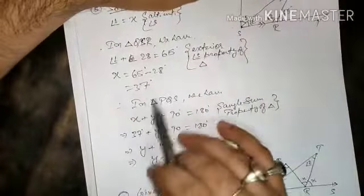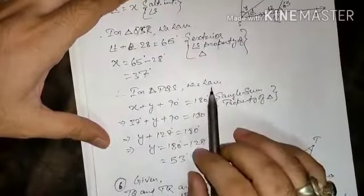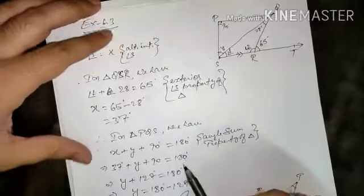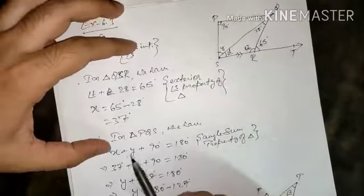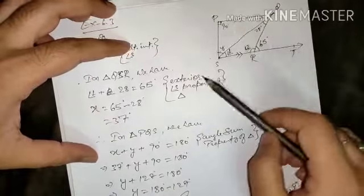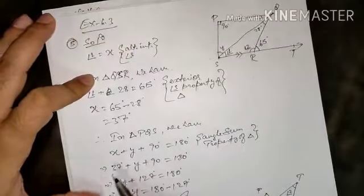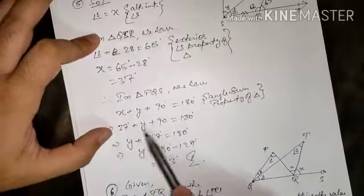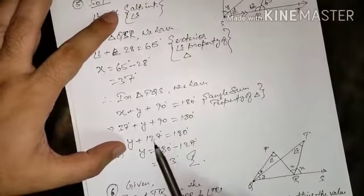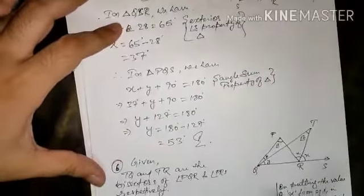Now in triangle PQS, we have X plus Y plus 90 equals 180 degrees. Here we use the angle sum property of the triangle. We know X is 37 degrees, so 37 plus Y plus 90 equals 180. Y equals 180 minus 127, so Y equals 53 degrees.